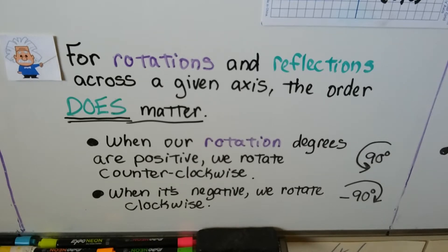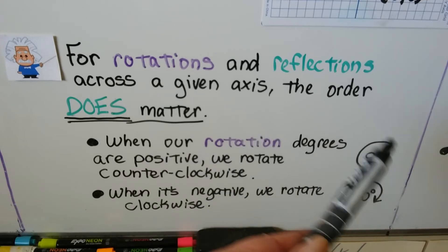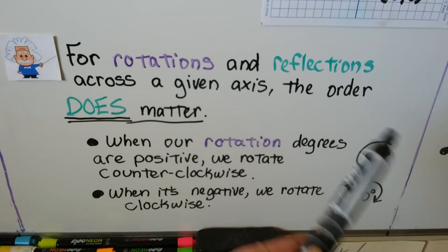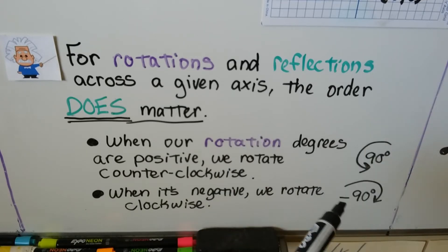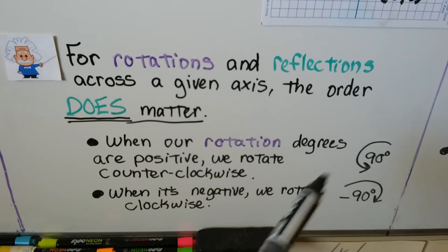When our rotation degrees are positive, we rotate counterclockwise. When it's negative, like negative 90 degrees, we rotate clockwise. So that's going to put us in a different quadrant if we're reflecting into a different quadrant.